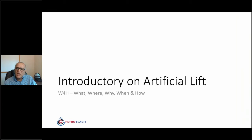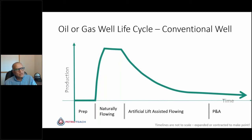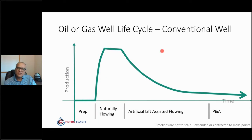We are going to look at the what, where, why, when, and how of artificial lift. Each oil or gas well life cycle follows a certain pattern: a quick ramp up, then a plateau or slightly declining plateau, and then a sharply declining phase. Artificial lift is typically applied once the decline phase begins, though for production acceleration reasons, some people begin applying artificial lift from day one. Most oil and gas wells in the world stay on artificial lift for a very long time period.